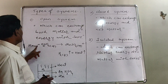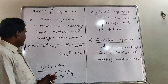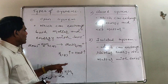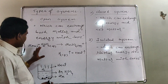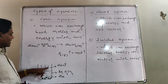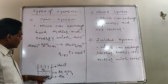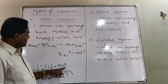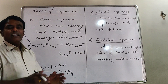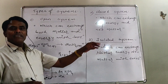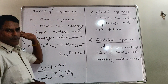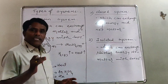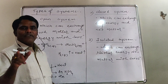Consider the reaction between zinc metal and dilute sulfuric acid in an open vessel. You will find zinc sulfate solution, hydrogen gas, and heat are produced. As the reaction is carried out in an open vessel, hydrogen gas is given out into the surrounding — that is exchange of matter. Heat produced is also given out — that is exchange of energy. So both matter and energy are exchanged with the surrounding, making it an open system. Another simple example: a cup of hot tea exchanges matter in the form of water vapor and energy in the form of heat with the surroundings.